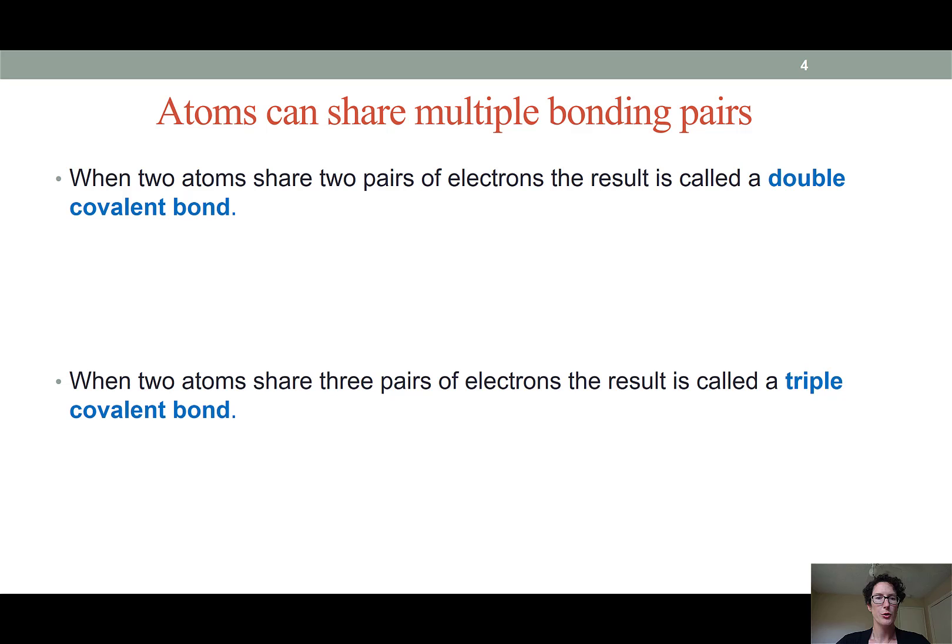It's important to notice that sometimes there aren't enough electrons available to have just a single bond between atoms and fulfill their octets. Sometimes we need to create multiple bonds. When two atoms share two pairs of electrons we call that a double bond. Here's an example in the oxygen molecule. Each oxygen atom has six valence electrons.